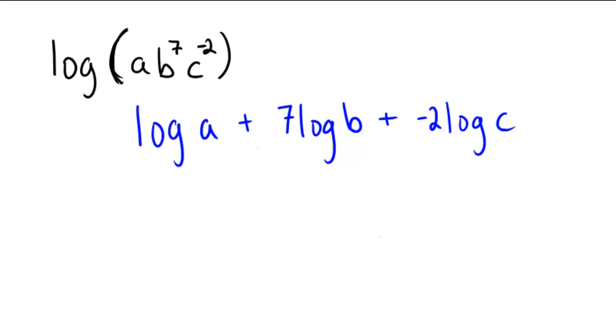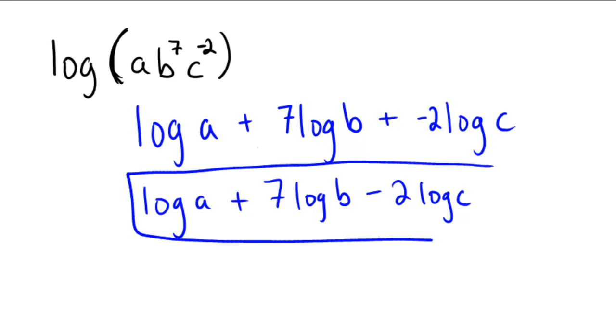So one extra credit little step of simplification, we might prefer to write this as log of a plus 7 log of b, and then adding a negative would mean this would be a minus 2 log of c. And that is our final answer.